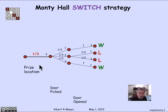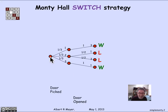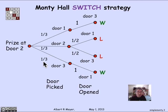There's the central branch we're keeping: we're assuming the prize is at door two, and then the door picked has three choices. The door opened then has two choices or one, depending on where the prize was placed relative to the contestant's pick. If the prize was at door two and the contestant picked door two, Carroll has a choice of two doors — one or three — to open. If the prize was at door two and the contestant picked door one, Carroll has no choice but to open door three with probability one.